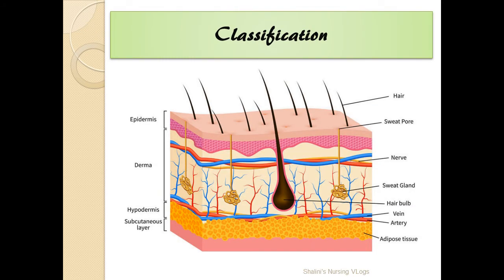Before we move on to the degree of burns, it is important to understand the classification of skin. This simple picture allows you to understand the skin layers and correlate them with the degrees of burns. The first layer is called the epidermis, beneath it is the dermis, and then you have the subcutaneous tissue.